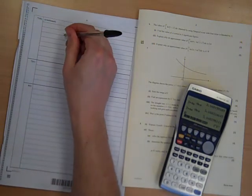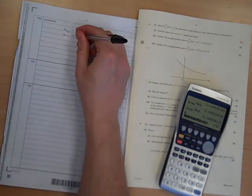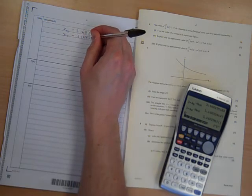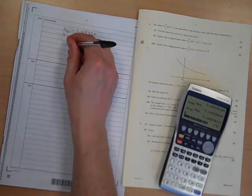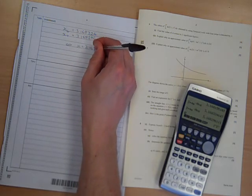If we want to, we can do one final one, just to make sure. 3.168296. I'm happy with 3.168. So x is 3.168.